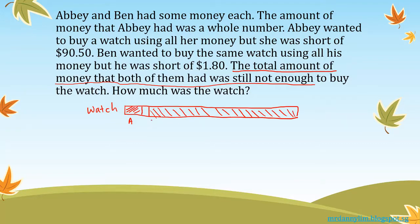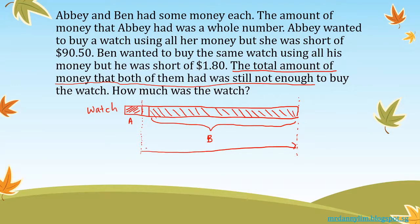This whole part is what Ben has. Now I add a few more pieces of information. If I extend the line down, we know that when Abby pays she is short of $90.50. Then when Ben pays, drawing a line down here, he is short of one dollar and eighty cents.